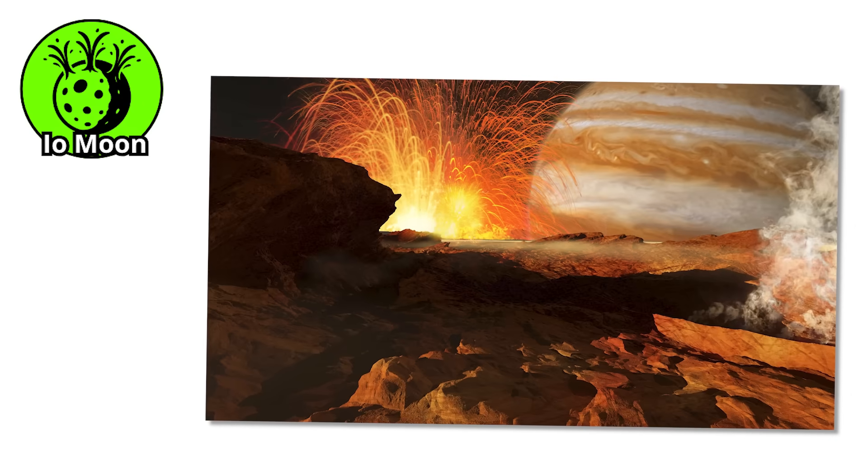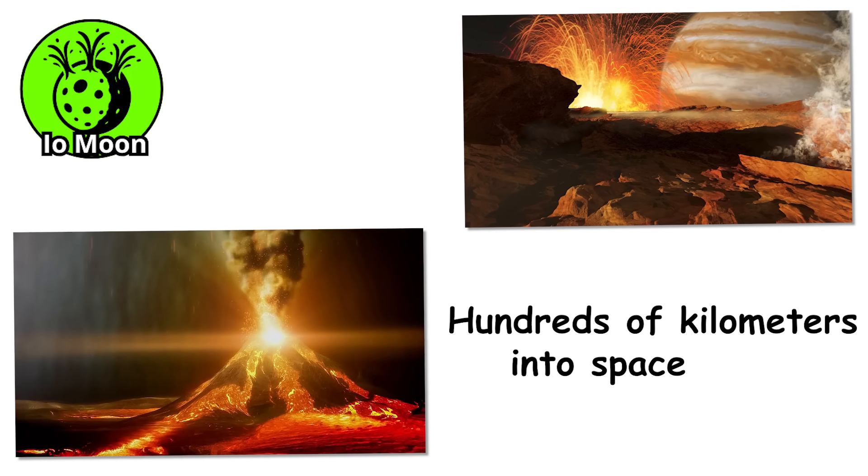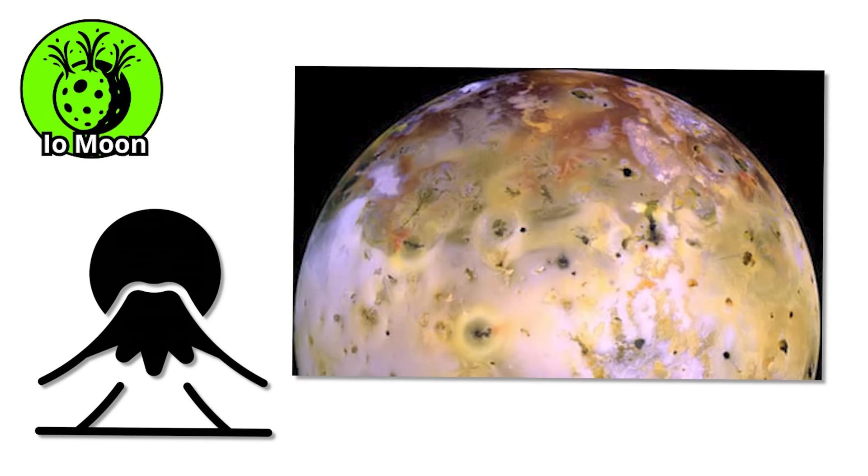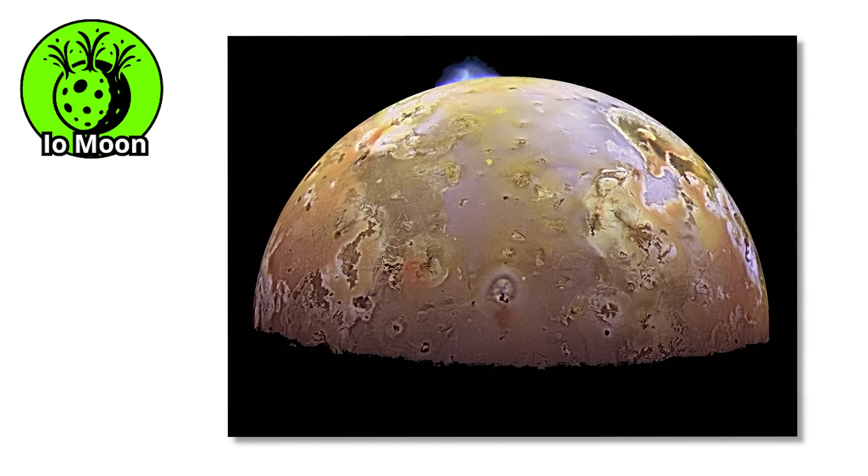Io has hundreds of volcanoes, many of which erupt with such force that they shoot lava fountains hundreds of kilometers into space. That is taller than Mount Everest stacked 20 times. Some of these eruptions can be seen with telescopes from Earth, and they never really stop. The moon is in a constant state of geological chaos.